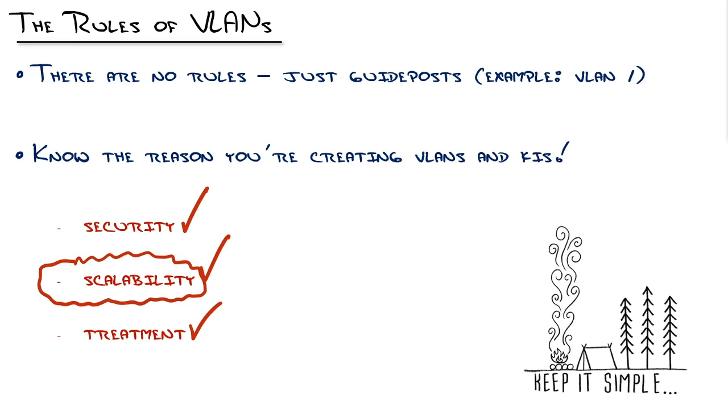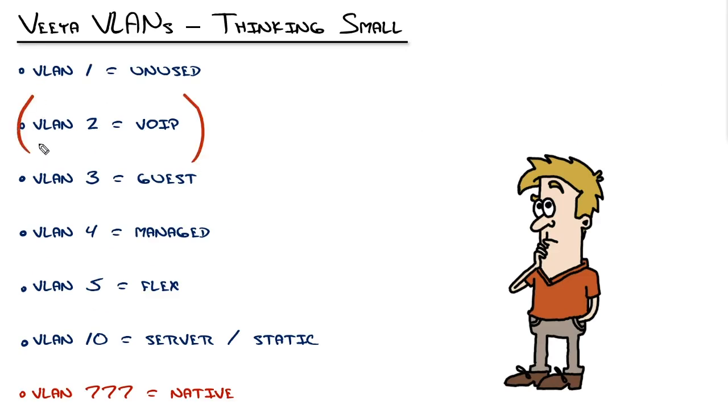What if one of your VLANs ends up outgrowing its subnet? Well, typically when you do subnetting, which by the way is going to be another topic that I have in this series, is how do you align the subnets to the VLANs in the best way?